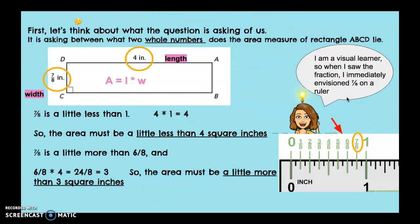First let's think about what the question is asking of us. It's asking between what two whole numbers does the area measure of rectangle ABCD lie? So I looked at my rectangle and I looked at the measurements. I know that 7/8 of an inch is the width, 4 inches is the length, and I also know that the formula for area is A = l × w.